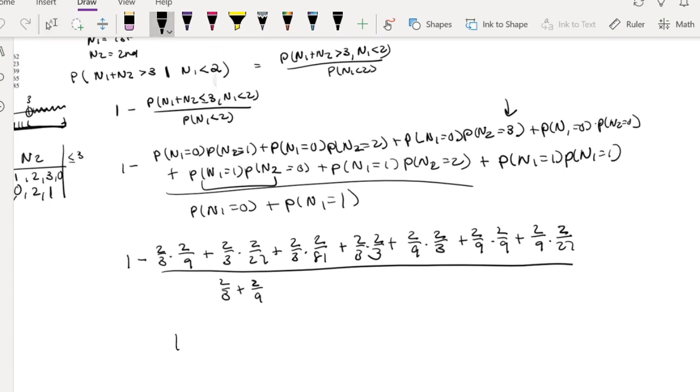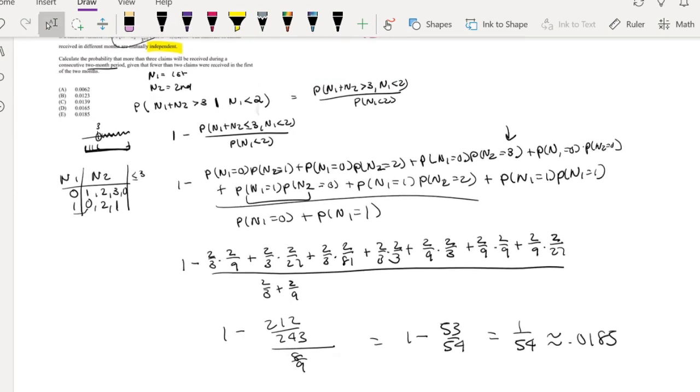Okay so this is equal to 1 minus... if I do this part, this is equal to 1 minus 53/54, which is also equal to 1/54, which is approximately equal to 0.0185, which is our answer E.